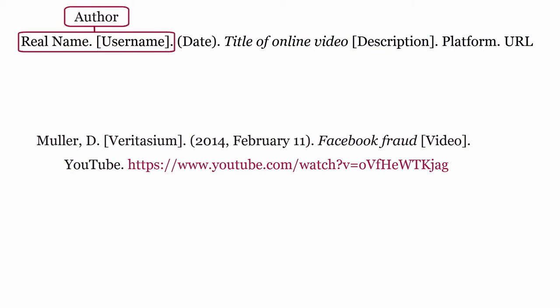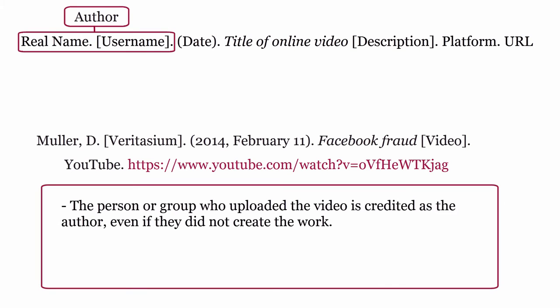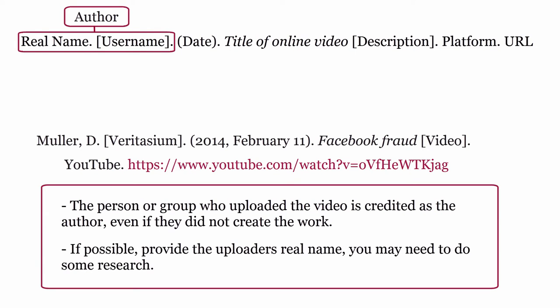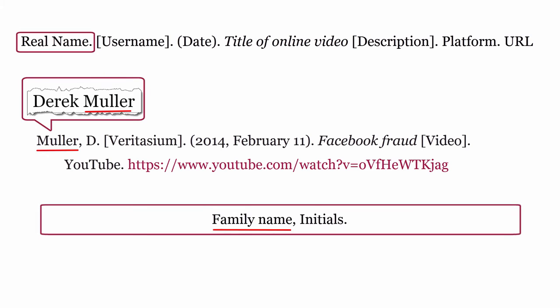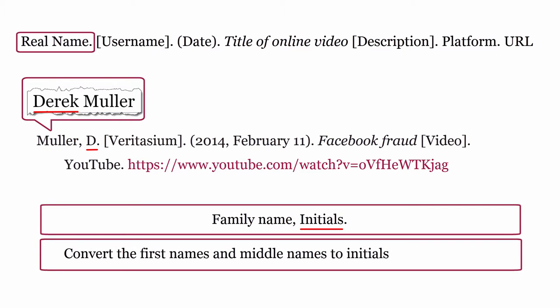Author. For videos that you have viewed online, you will need to include the author. The person or group who uploaded the video is credited as the author, even if they did not create the work. If possible, provide the uploader's real name — you may need to do some research. Start with the family name, comma, then convert first names and middle names to initials, including a full stop after each initial.